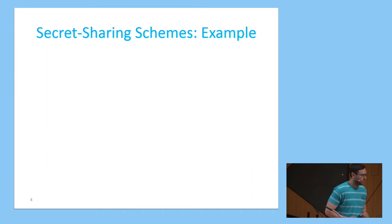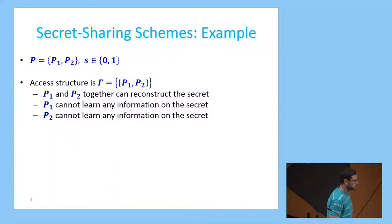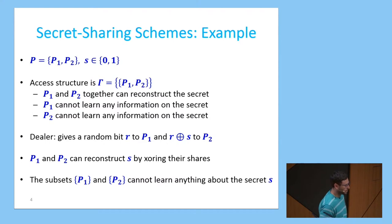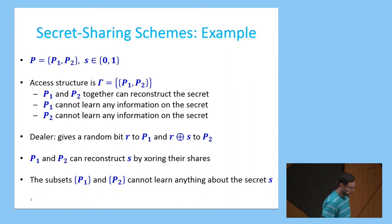I will show you a simple example of a secret sharing scheme. Consider a set of two parties, P1 and P2, and a one-bit secret S. The access structure is the set of both parties, meaning P1 and P2 together should learn the secret, while P1 alone or P2 alone should not learn any information. The dealer chooses a random bit R, gives it to P1, and gives P2 the bit R XOR S. Both parties can reconstruct the secret S by XORing their shares, and each party individually cannot learn any information since they only hold a random bit.